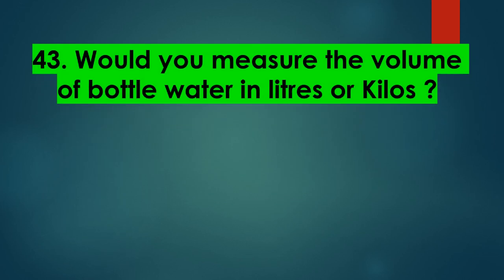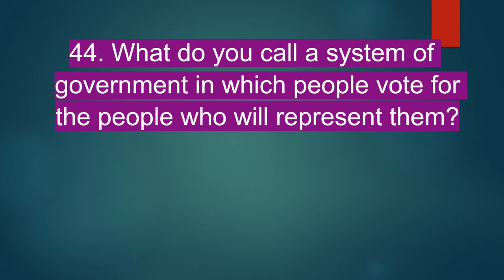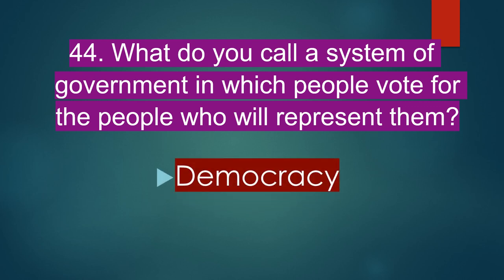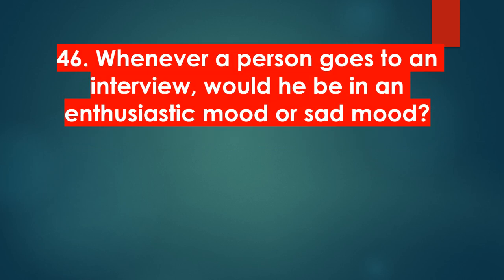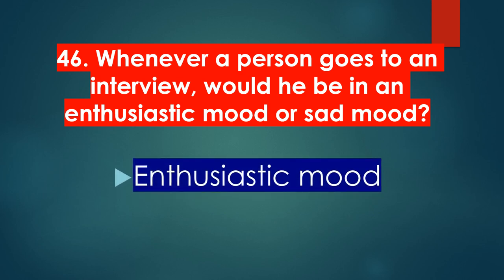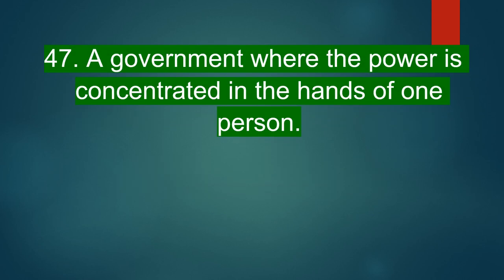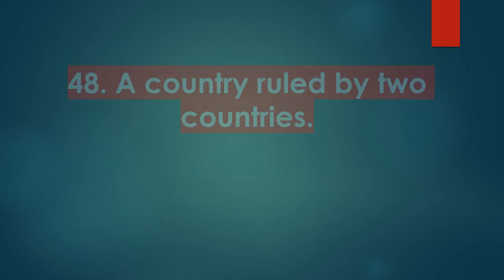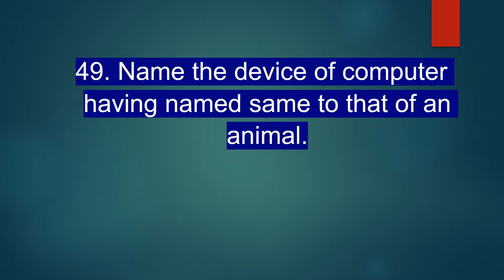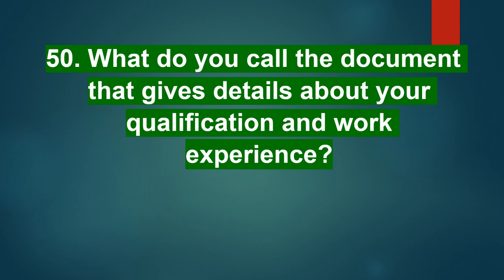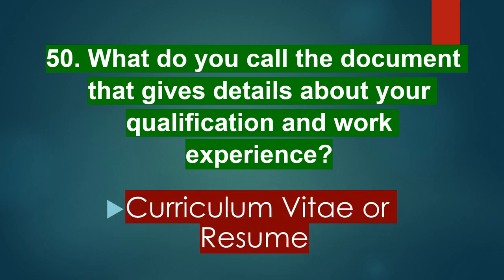Would you measure the volume of bottled water in liters or kilos? Liters. What do you call a system of government in which people vote for the people who will represent them? Democracy. What do you call tax on goods produced and used in a country? Excise tax. Whenever a person goes to an interview, would he be in an enthusiastic mood or a sad mood? Enthusiastic. A government where the power is concentrated in the hands of one person? Autocracy. A country ruled by two countries? Condominium. Name the device of a computer having a name the same as that of an animal. Mouse. What do you call the document that gives details about your qualifications and work experience — curriculum vitae or resume?